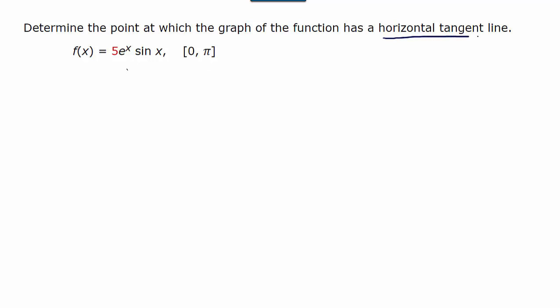Now whenever we see horizontal tangent line, we want to be thinking where is the slope of the tangent line going to be 0, because horizontal lines have a slope of 0. So that means that our first challenge is to find the derivative of the function.